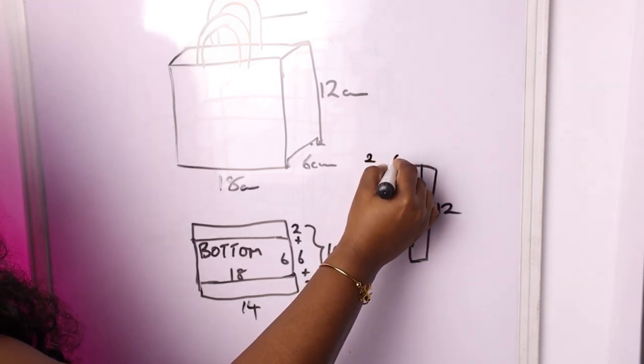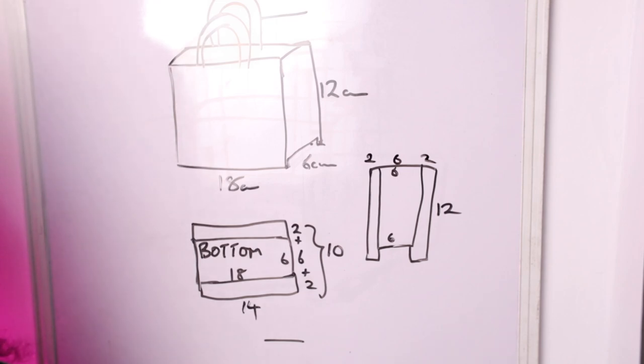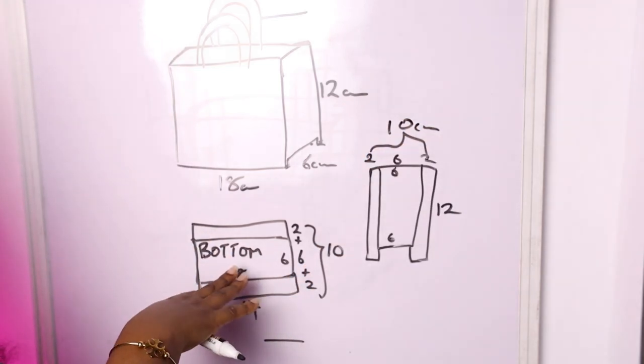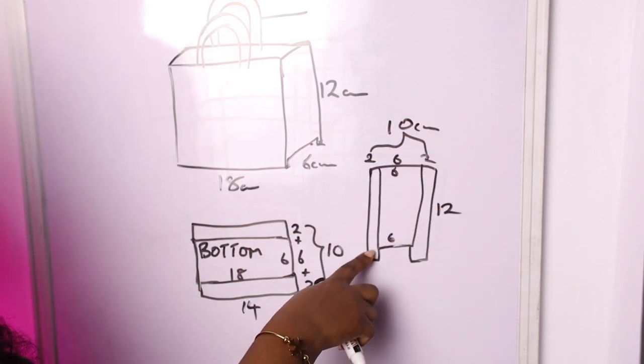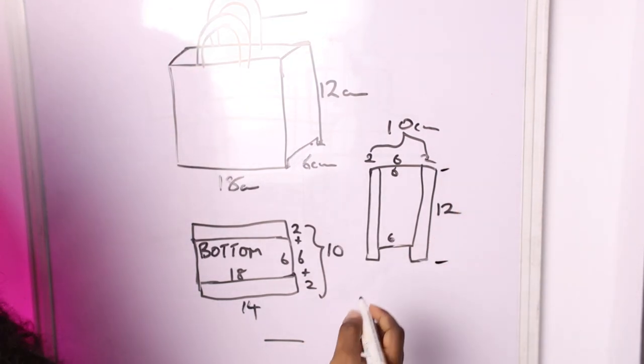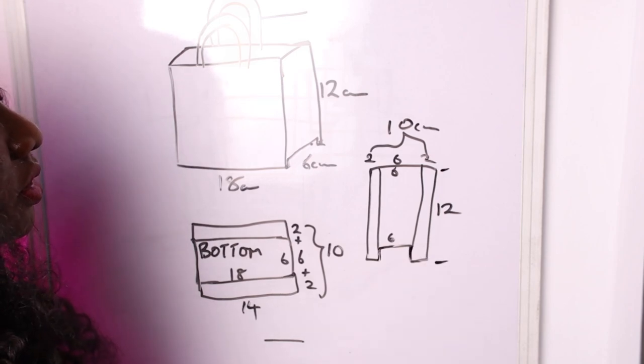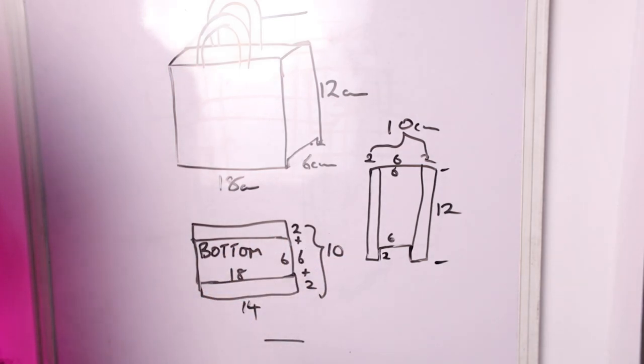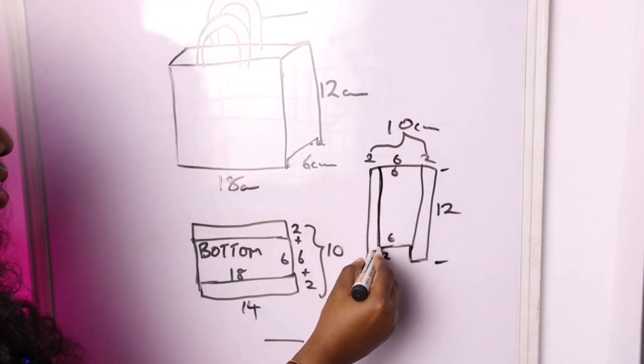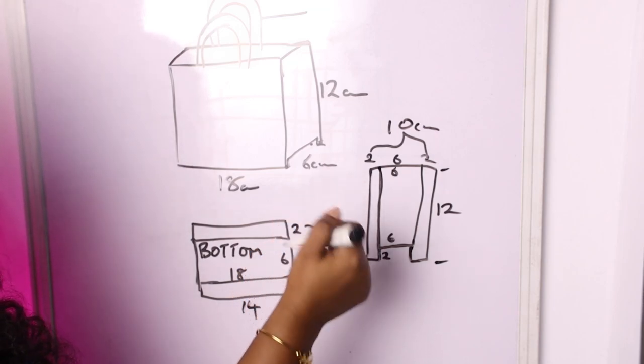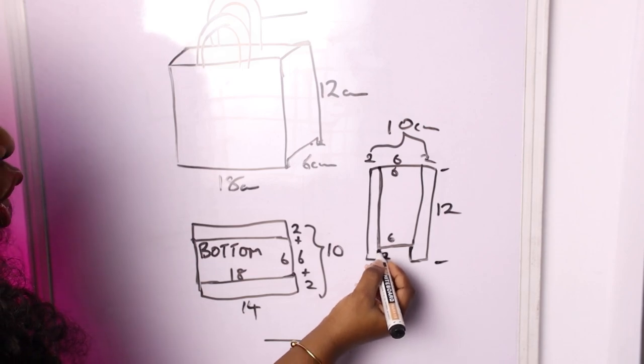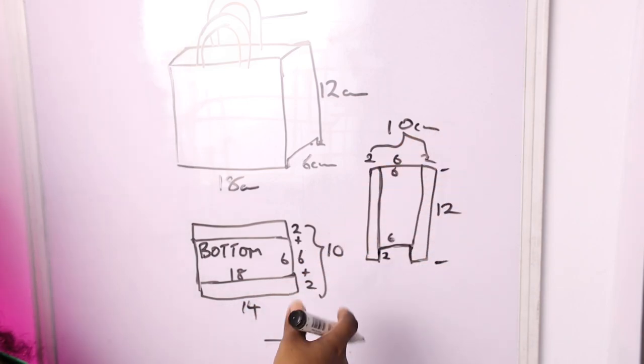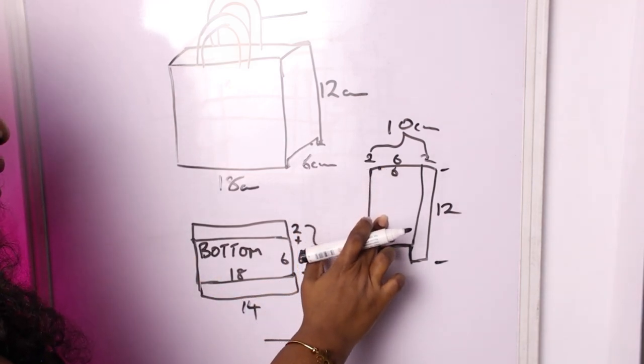The way you added two centimeter here and here, you are adding it here and here. So it means that it will now be 2 plus 6 plus 2, which will now give you the same 10 centimeter. But the only thing now is that unlike this one that you added, you're just going to leave the height like this. So you just add here and here. So here to here, you're not changing the height. You're just going to come inside and notch it. You're cutting two centimeter inward. I used to make this mistake a lot.